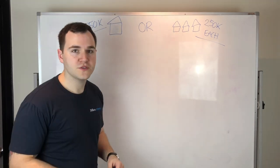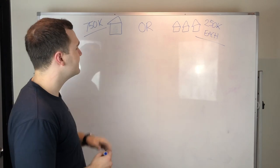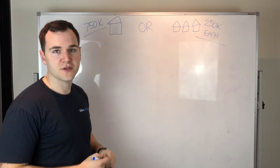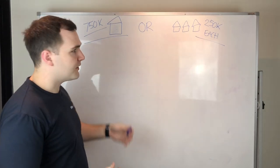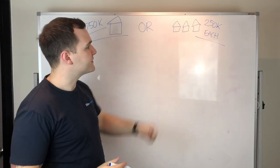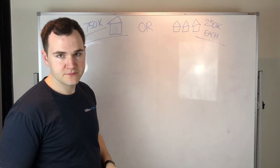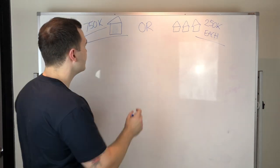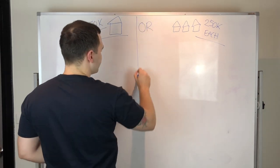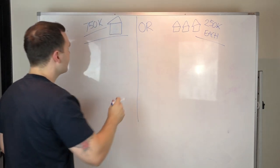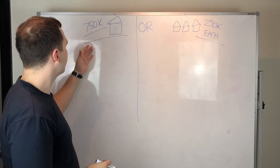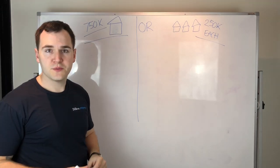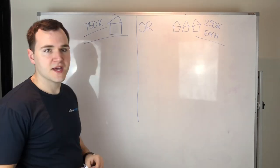Looking behind me on the board, say for example we're going to run through different scenarios. Say you can buy one property for $750,000 or you could buy three properties for $250,000 each. Say for example you want to buy your first investor property and you go to your mortgage broker and they say you can borrow $750,000.